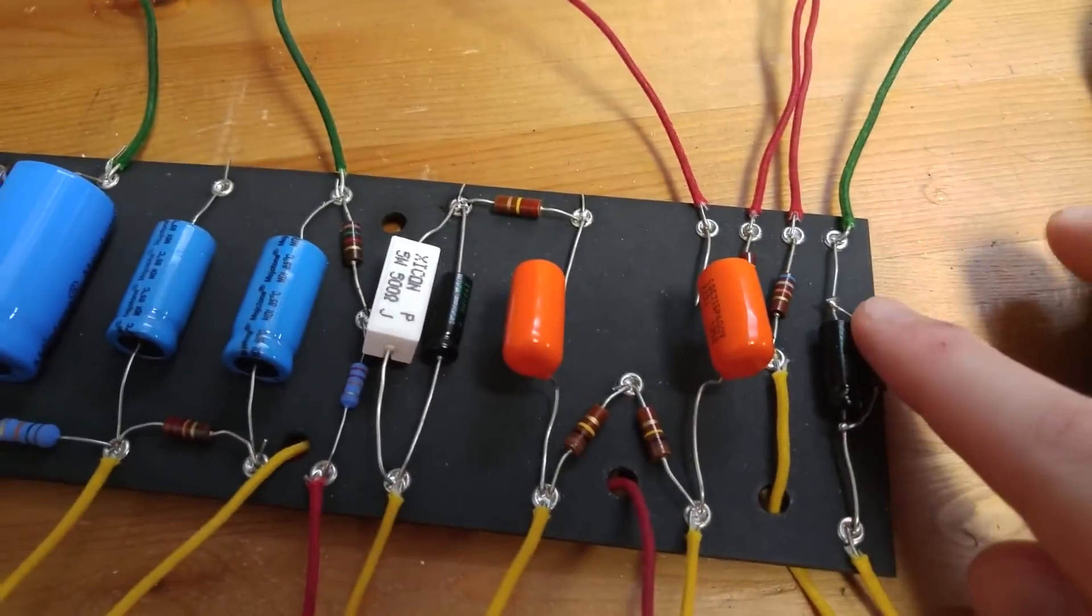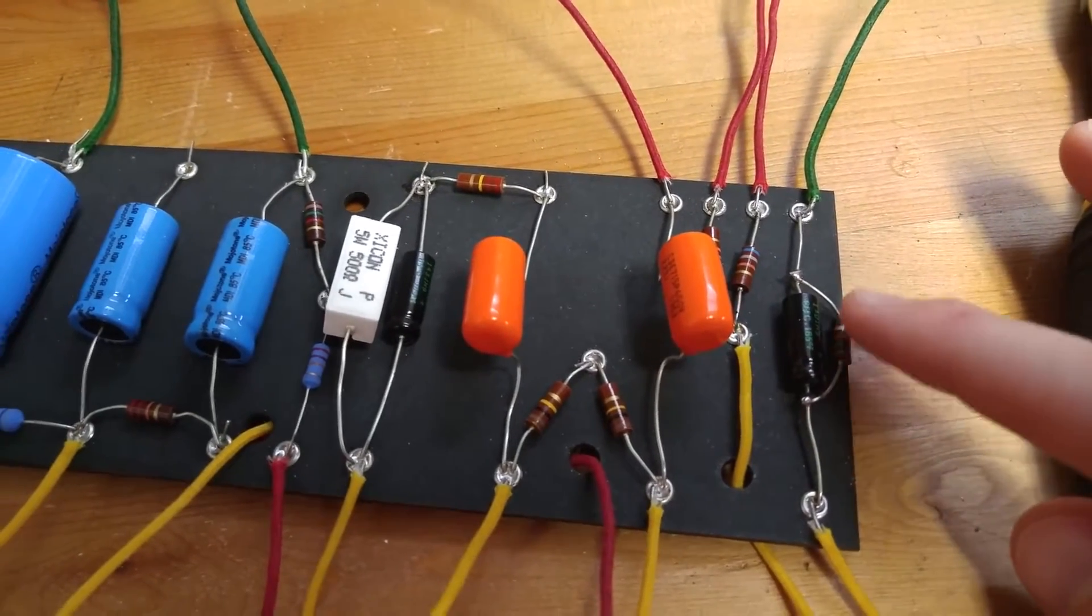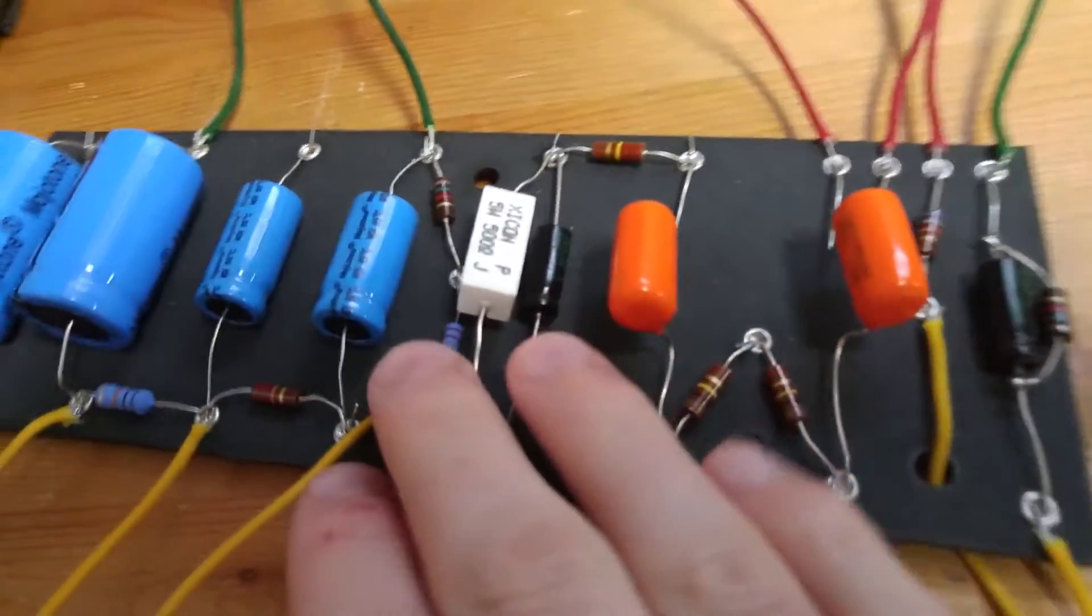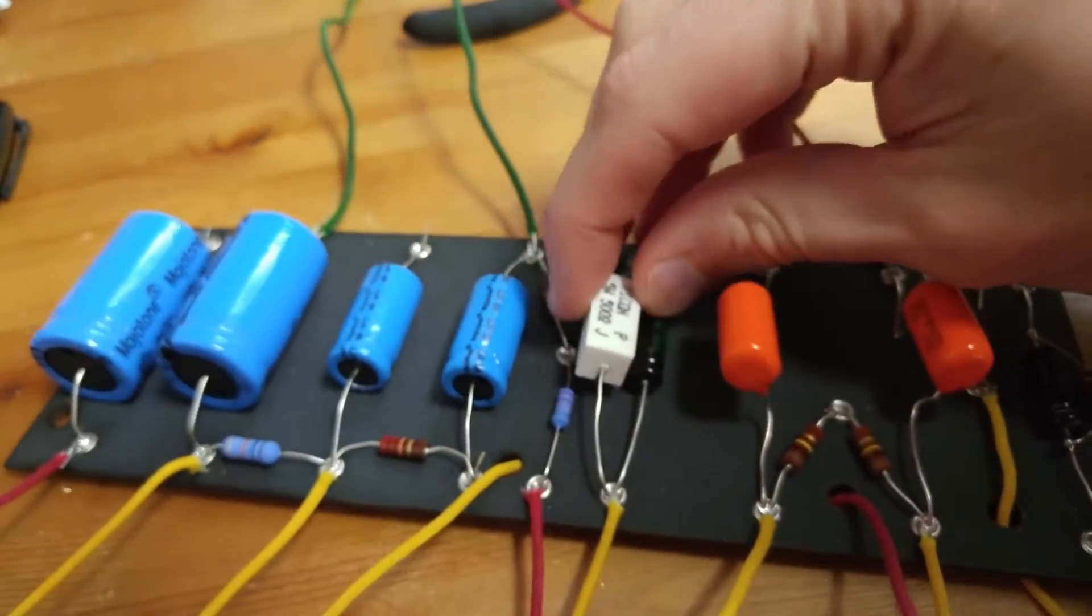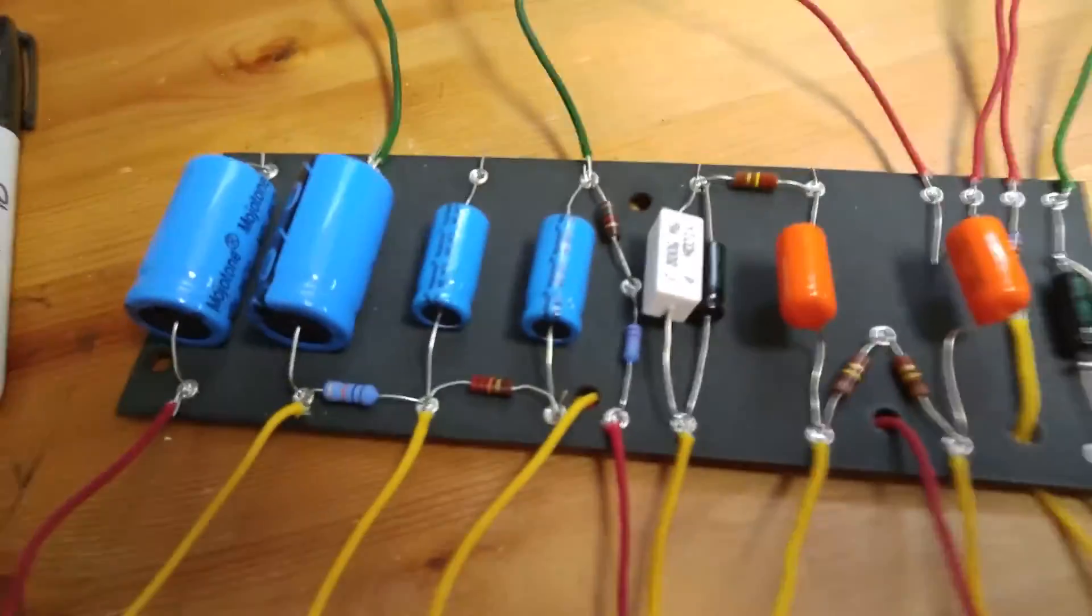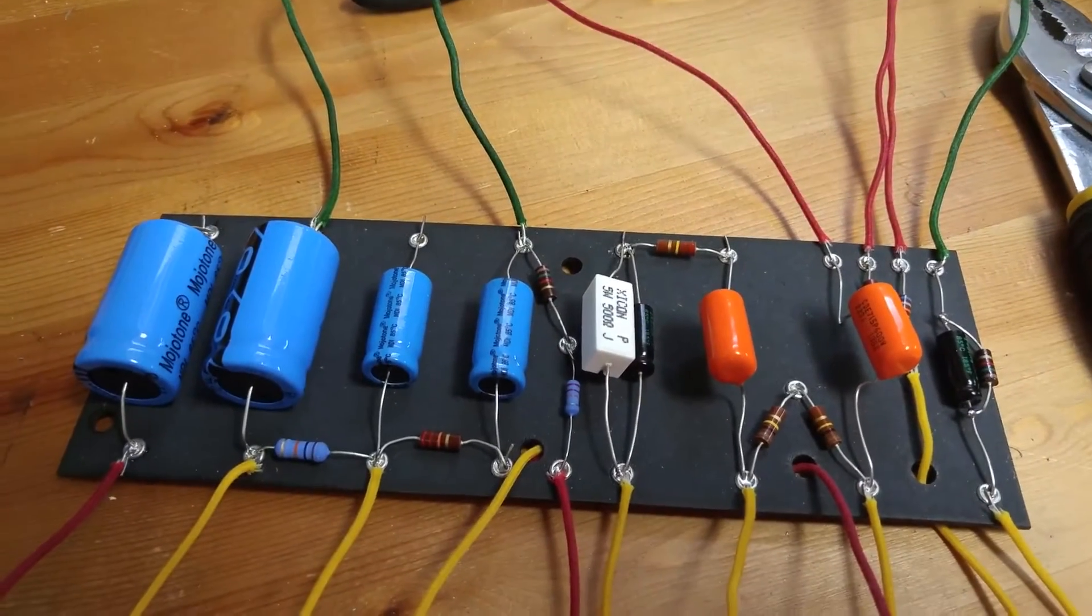So a couple things to keep in mind with this build. One is you want to get a little bit of space between these two components. And these as well, right here. You just don't want them lying right on top of each other. Just get a little bit of space in there because the resistors will get a little hot.